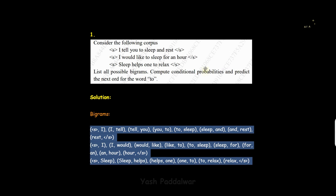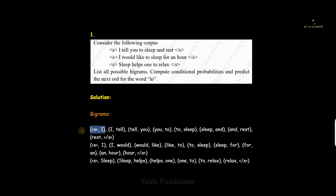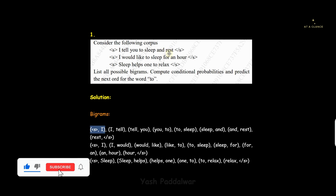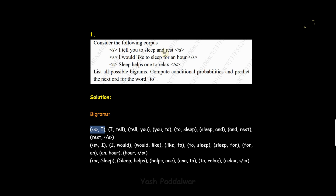Once bigrams are done, next we have to find out the conditional probabilities of every pair of words. For calculating the conditional probabilities you can look at the bigrams or directly at the sentences. The first two words are the S-tag and 'I'. We have to find the conditional probability such that if the previous word is S-tag, what are the chances the current word will be 'I'. For example, consider the words 'and' and 'rest' — 'and' is the previous word, so what is the probability that 'rest' comes next?